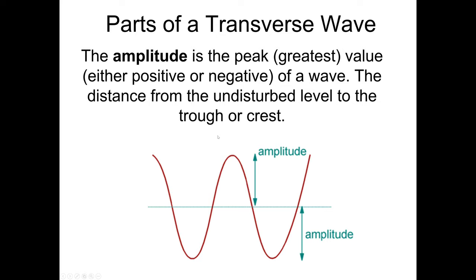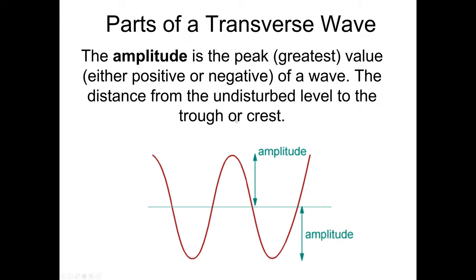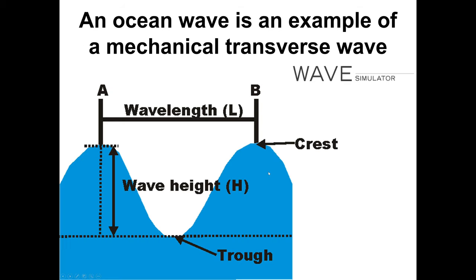Amplitude. I actually wanted to cover equilibrium point first, because equilibrium point is the middle of the wave. As you can see, it goes up and down and up and down, but all around the middle point. That's the equilibrium point. Amplitude is the peak, greatest value. The distance from the equilibrium point. It's either the distance from top to middle or bottom to middle. That's the amplitude. Ocean wave is a great example of a wave.